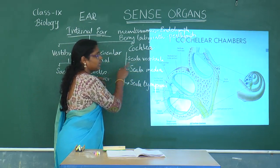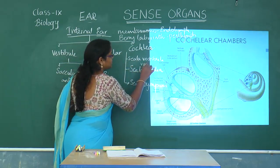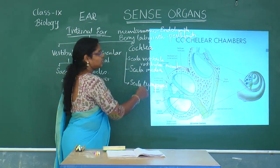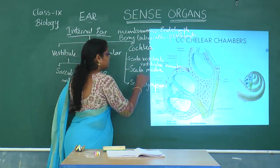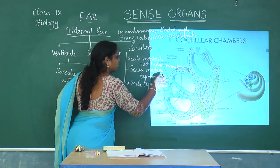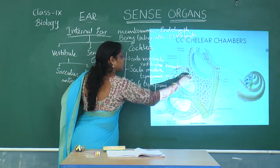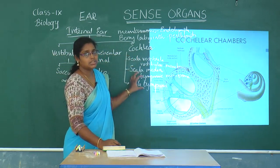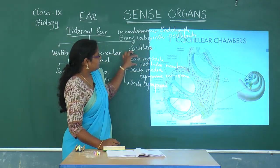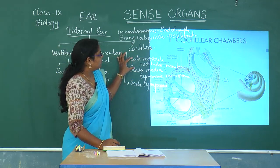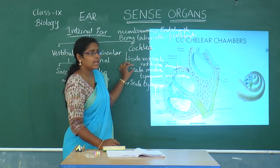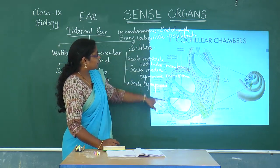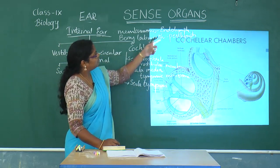Due to the presence of two membranes, the cochlea has three chambers. Between scala vestibuli and scala media, the vestibular membrane is present. Between scala media and scala tympani, the basilar membrane is present. Perilymph flows in the scala vestibuli and scala tympani, while endolymph flows in the scala media.